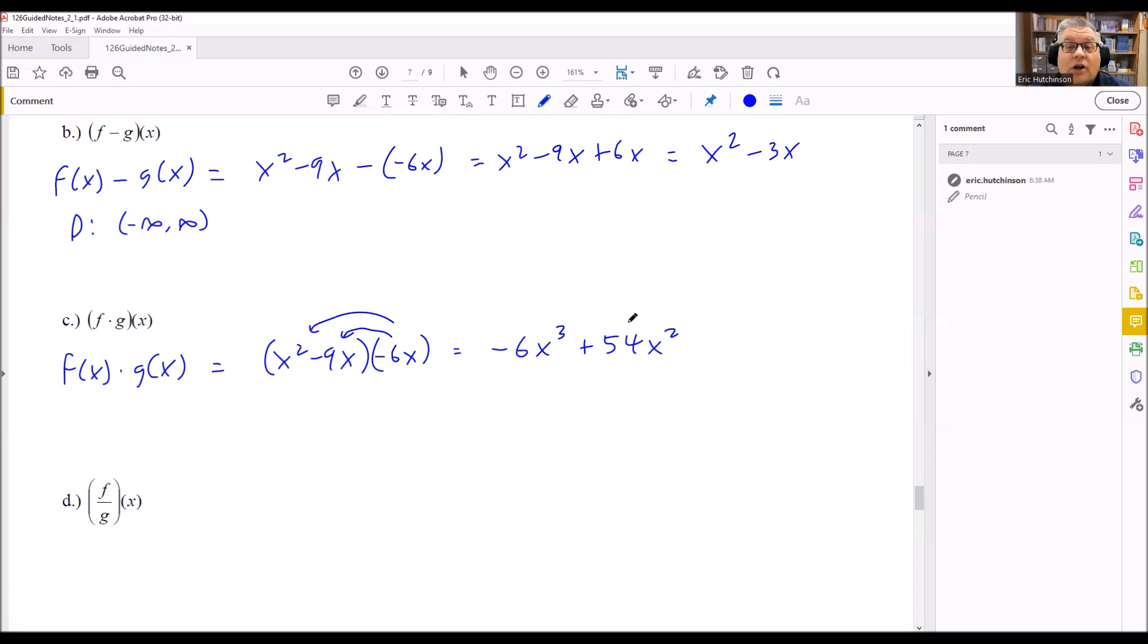Once again, we get another polynomial. The domain is going to be negative infinity to positive infinity. Okay, so for that one, again, it's a cube. But there's no division by 0, no square roots. And so that would be your answer, negative infinity to positive infinity.